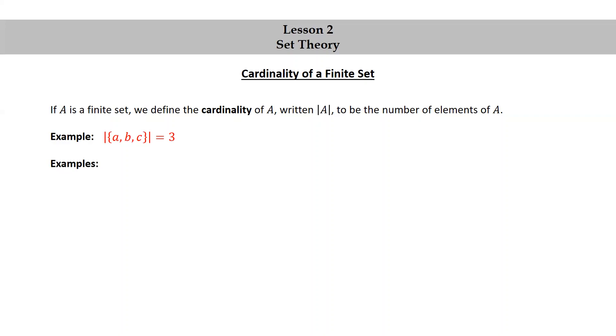Let's look at some more examples. Let A be the set consisting of cat, dog, horse, and walrus. Then the cardinality of A is four.